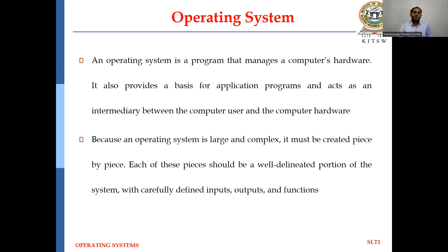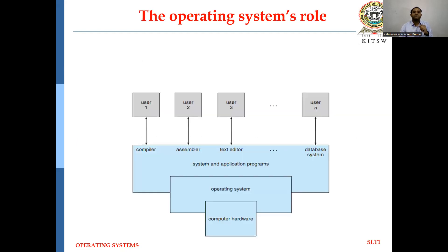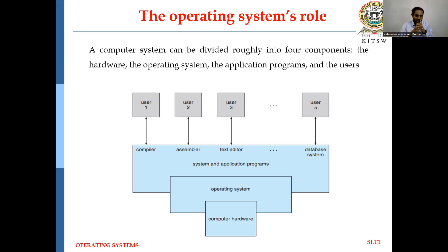Because an Operating System is large and complex, it must be created piece by piece. Each piece should be a well-defined portion of the system with carefully defined inputs, outputs, and functions. These are the Operating System roles. The Computer System can be divided roughly into four components: hardware, operating system, application programs, and the user.